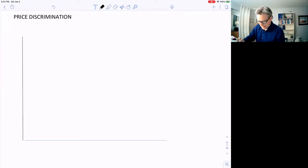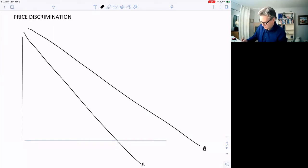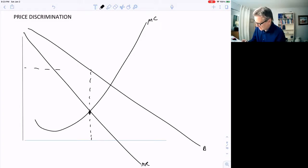So the monopolist has this demand curve, marginal revenue curve, marginal cost curve. And produces right here where the marginal cost equals the marginal revenue. And then we go up here and charge this price, this monopoly price. And that will maximize their profit.